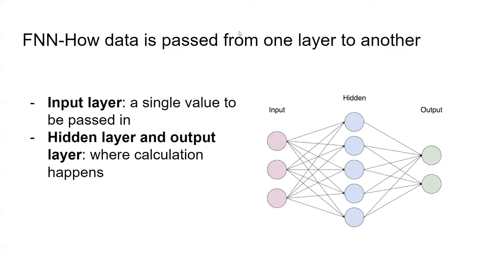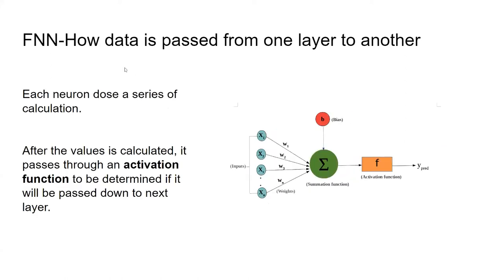In the input layer, a single value is passed into each neuron and no calculation happens there — the data is just passed into the next layer. In the hidden layer and output layer is where all the calculations happen. What does each neuron do? They all perform the same very basic math operation.